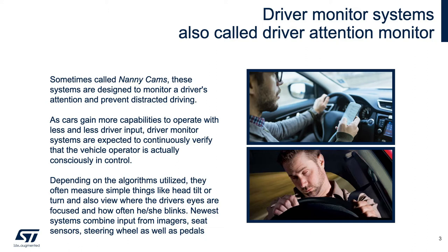It can look at where your irises are and where your head is tilted. So it can tell if you're looking at a cell phone, if you're looking at your child in the seat next to you, if you're looking out the window, or if you're asleep or drunk. All of these things are what we're trying to accomplish by having a driver attention system.